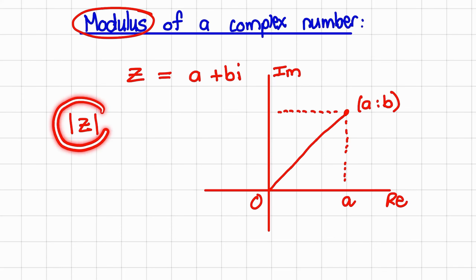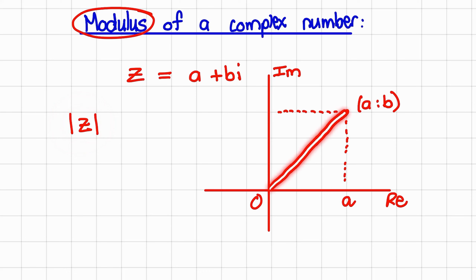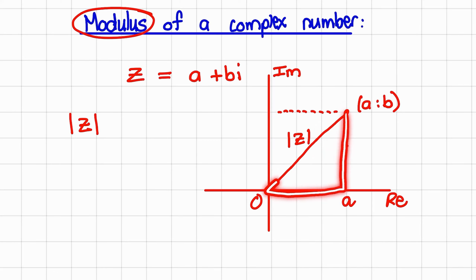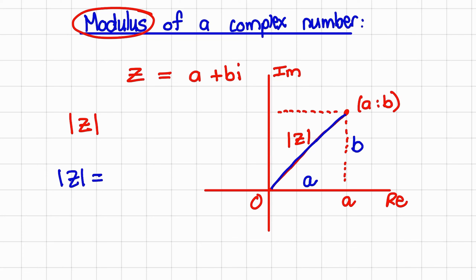For complex numbers, the modulus represents the length of the line formed between the origin and the point on the complex plane. This line would be noted as the modulus of the complex number. You would notice that this forms a right-angled triangle, where one side has length a and another side has length b. To find the modulus, we can use Pythagoras: the modulus equals the square root of a squared plus b squared.